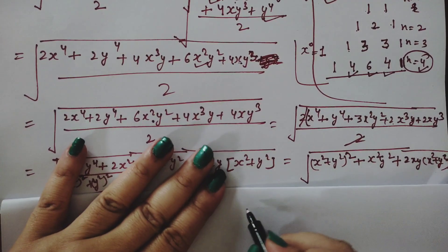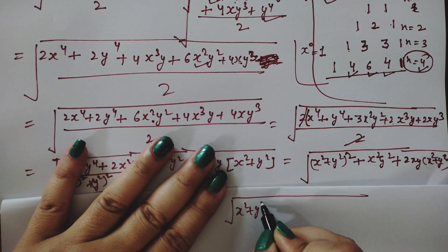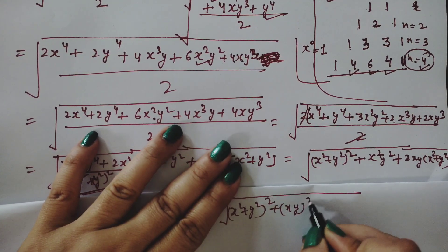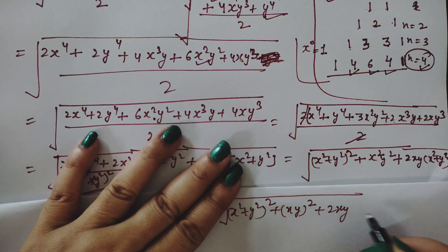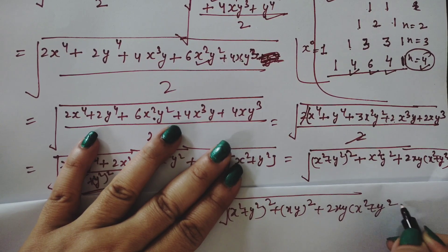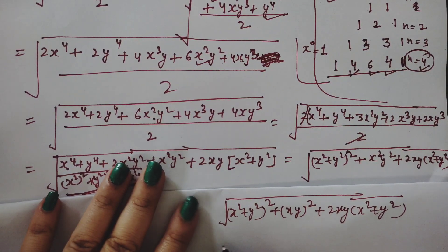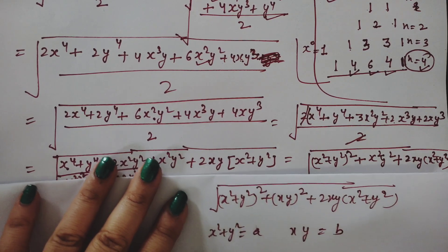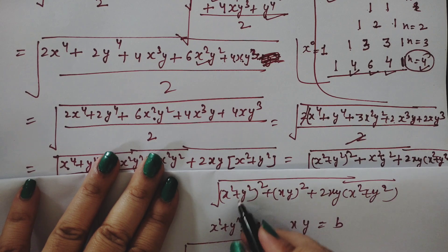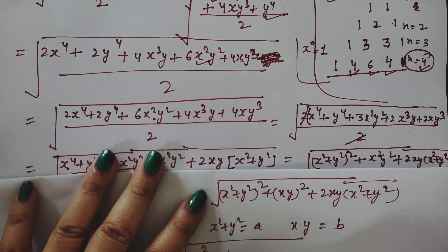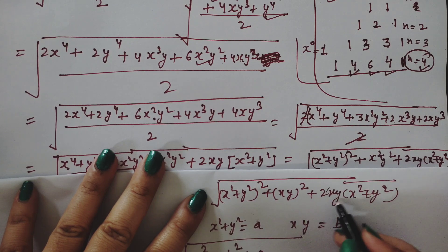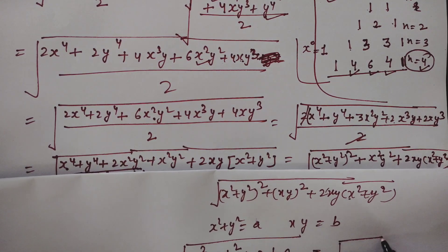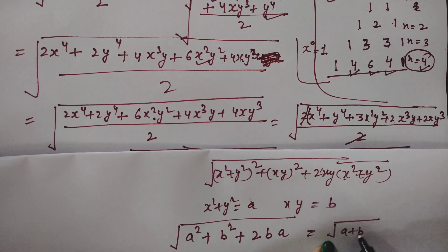We have (x²+y²)² + 2xy(x²+y²) + (xy)². Letting a = x²+y² and b = xy, this is a² + 2ab + b², which is the identity (a+b)². Taking the square root cancels the square, giving us simply a + b, which is x²+y² + xy.